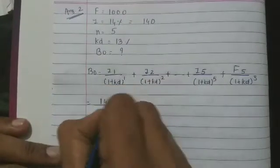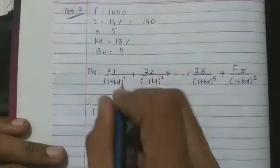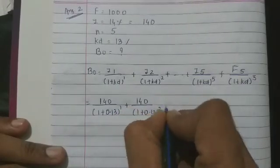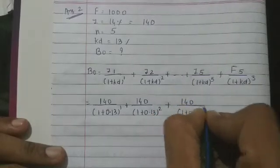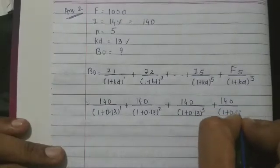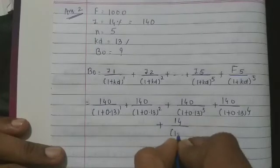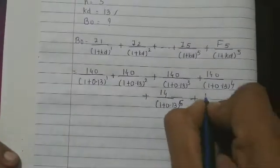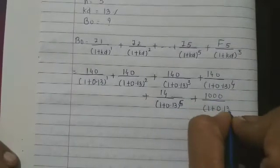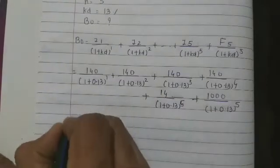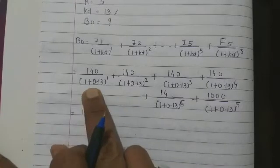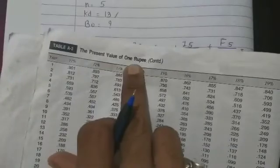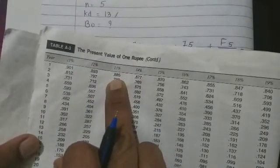Interest is 140. So B0 = 140 / (1 + 0.13)^1 + 140 / (1 + 0.13)^2 and so on. We'll use the present value factor table. 140 multiplied by the table value at 13 percent for the 1st year from the present value of 1 rupee table. Present value of 1 rupee table at 13 percent is 0.885.